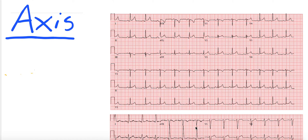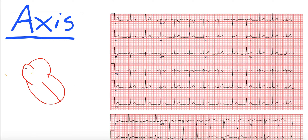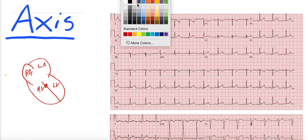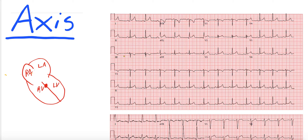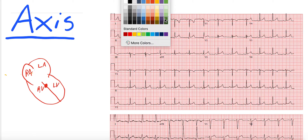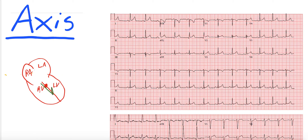So axis on a 12-lead EKG is all about the summed largest vector of overall electrical activity, or depolarization. I want to draw a heart — here's a heart. This is RA, LA, RV, LV, and we'll call this the central point. When understanding axis, it's important to remember that overall heart depolarization goes in this direction — a little bit slanted toward the bottom left. That is the overall normal depolarization of the heart.